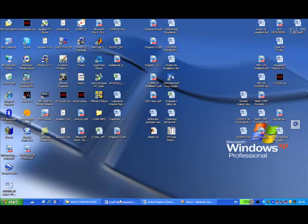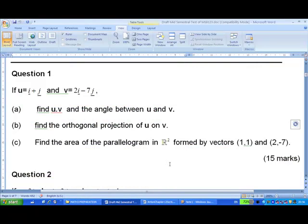Hello. For this recording, I will show you how to do question 1A of the 2009 semester 2 MST test sample. So, if u equals i plus j and v equals 2i minus 7j, find u dot v and the angle between u and v.